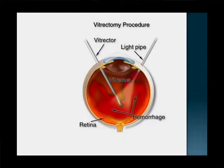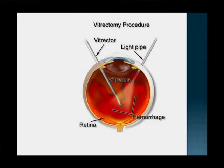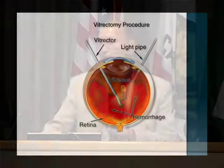Lastly, vitrectomy surgery is only for patients with very advanced disease who have lost vision significantly — when the vitreous is full of blood, the retina has scar tissue, or the retina has detached. Vitrectomy instruments are used to remove all the blood and gel from the back of the eye. This surgery takes typically an hour and a half to two and a half hours and is also done outpatient. And that is the end of the talk — thank you so much.